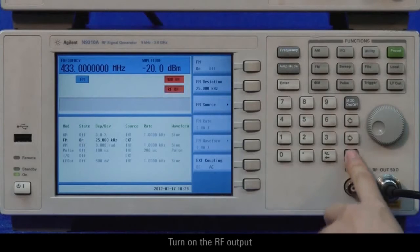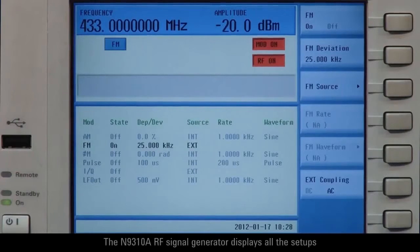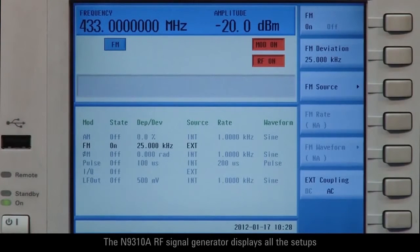Turn on the RF output. The N9310A RF signal generator displays all the setups.